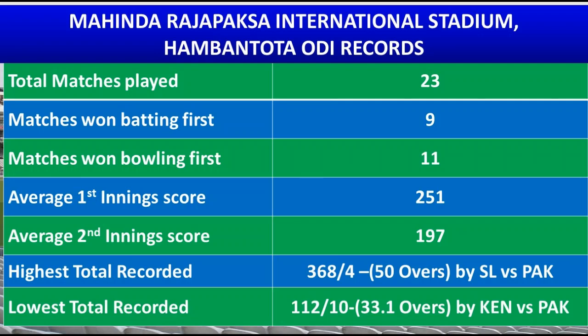Regarding Mahinda Rajapaksa International Stadium Hambantota ODI records, 23 matches have been played on this pitch. 9 matches were won by the team batting first and 11 by the team bowling first. The average first innings score is 251 and average second innings score is 197. The highest total here is 368 for 4 by Sri Lanka vs Pakistan, and the lowest is 112 all out by Kenya against Pakistan.